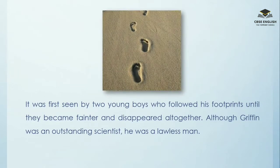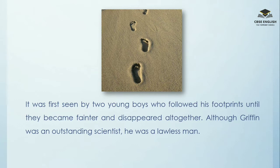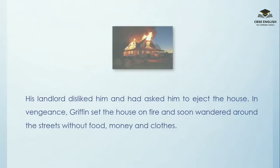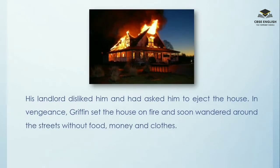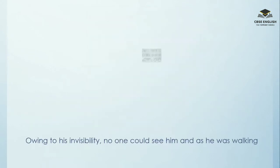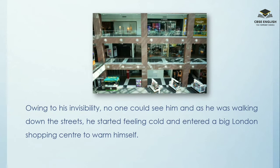It was first seen by two young boys who followed his footprints until they became fainter and disappeared altogether. Although Griffin was an outstanding scientist, he was a lawless man. His landlord disliked him and had asked him to eject the house. In vengeance, Griffin set the house on fire and soon wandered around the streets without food, money and clothes. Owing to his invisibility, no one could see him, and as he was walking down the streets, he started feeling cold and entered a big London shopping centre to warm himself.